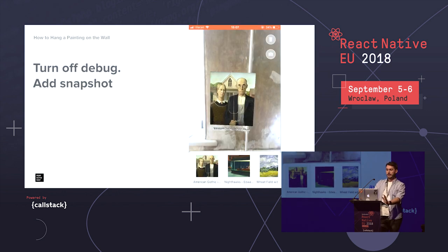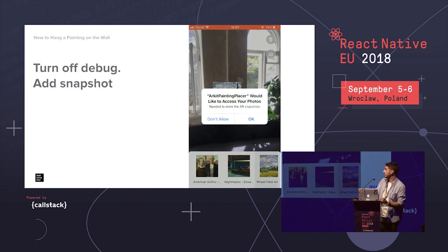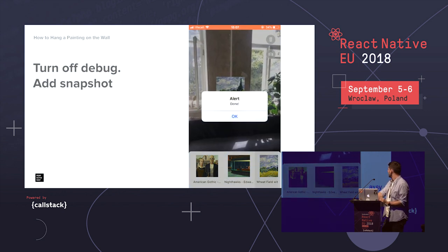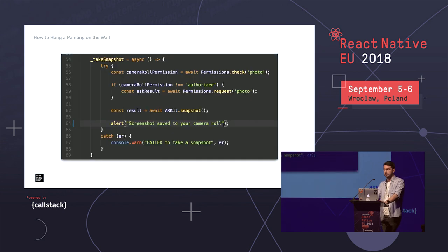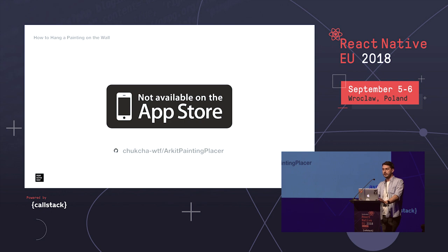With all that done we can turn off debug mode and add the final feature: a snapshot. It's always good to be able to take a photo of the environment with AR objects and share it with friends, an interior designer, or your personal art consultant. The snapshot feature is shipped with ARKit. We check camera roll permissions before saving. The result is not a screenshot with UI controls — it's a real-world photo with the 3D objects applied. Finally, we're done and ready to ship to the App Store.